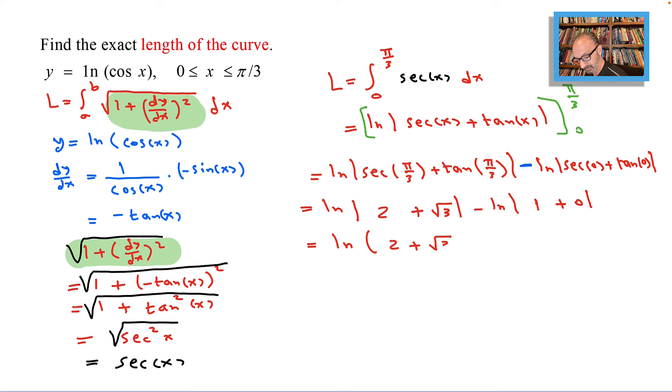We don't need the absolute values anymore, so it's ln 2 plus root 3 minus ln 1. ln 1 is 0, so the final answer equals ln of 2 plus root 3. That is my final answer, and that should do it.